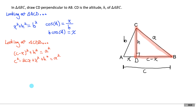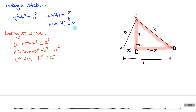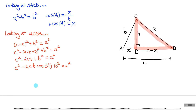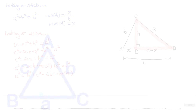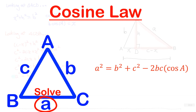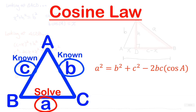Looking back at the expression from the other triangle, X squared plus H squared equals B squared. In the current expression we have X squared plus H squared, so we can replace that with B squared. And since X equals B·cos A, we replace X with B·cos A. Rearranging gives us cosine law: A squared equals B squared plus C squared minus 2·B·C·cosine of angle A. This formula lets us solve for a side length if we know the other two sides and the angle contained by those two sides.